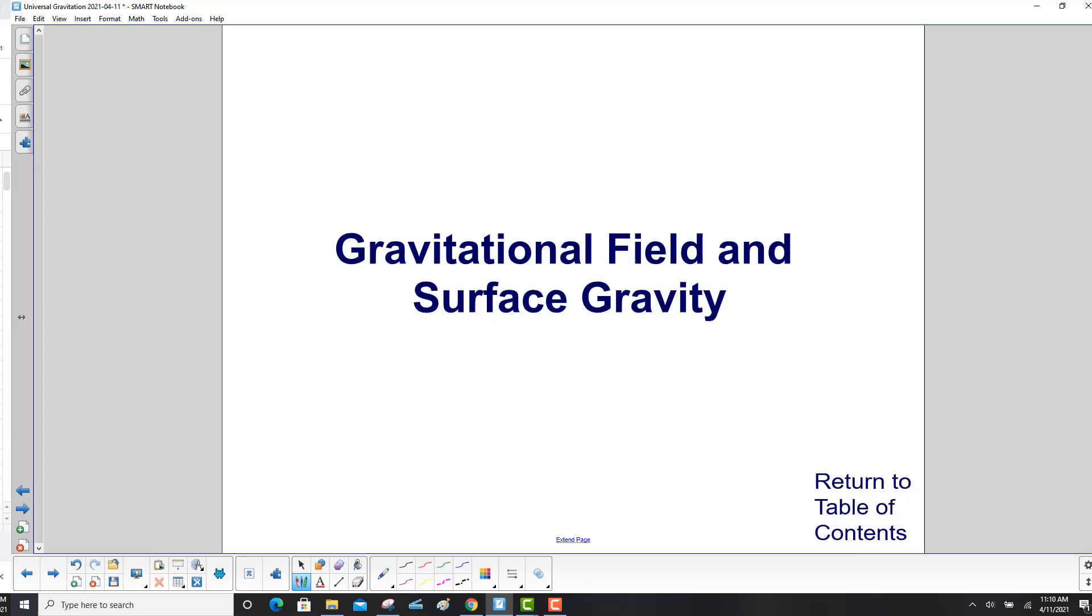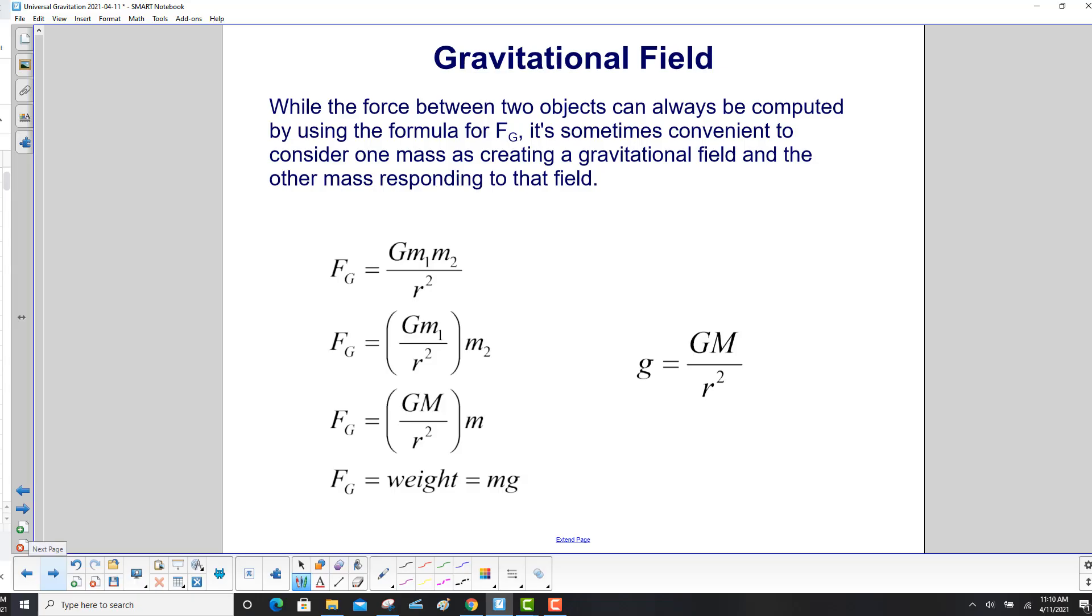Gravitational Field and Surface Gravity. While the force between two objects can always be computed by using the formula for gravitational force, it's sometimes convenient to consider one mass as creating a gravitational field and the other mass responding to that field.